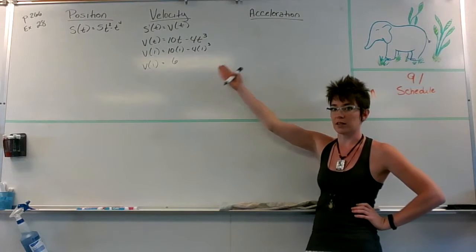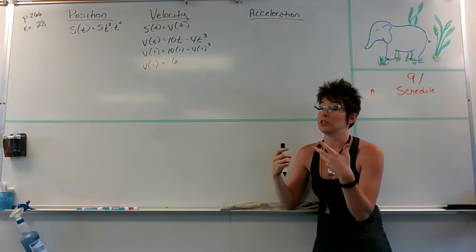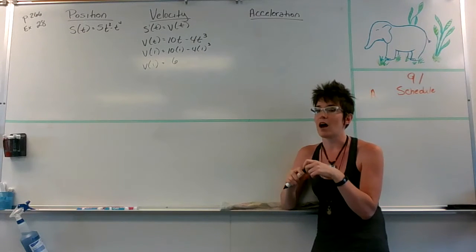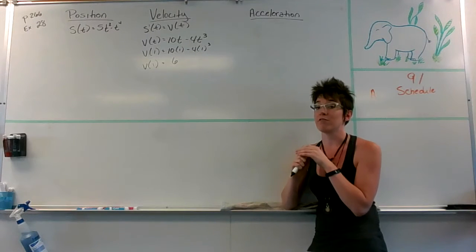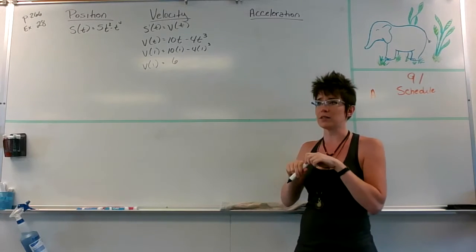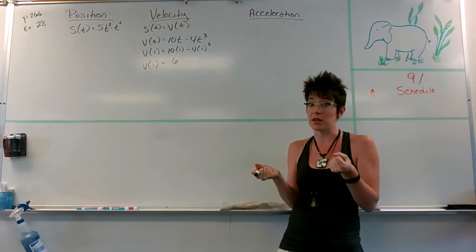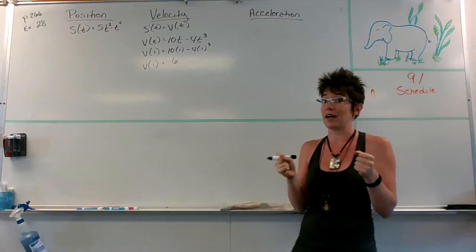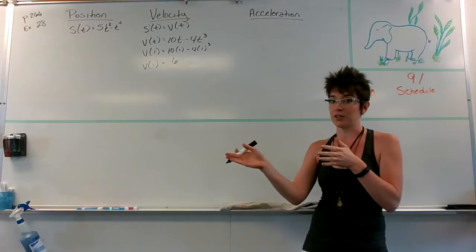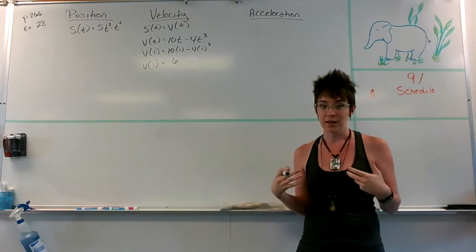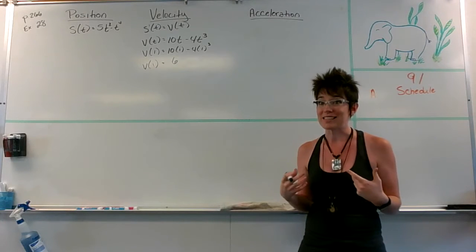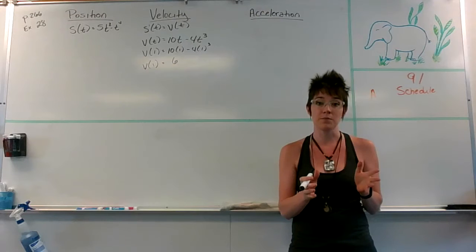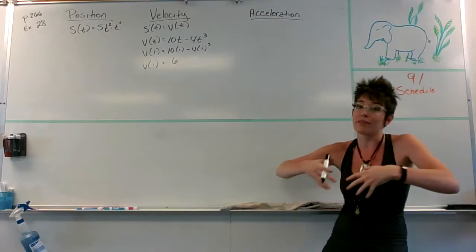The connection between velocity and acceleration is like driving a car — the gas pedal can also be called an accelerator. Acceleration is basically how quickly your velocity changes. If I have positive acceleration, that means I'm speeding up. But if I hit the brakes, that's technically negative acceleration — a decelerator. So acceleration is the rate of change in your velocity: positive if you're speeding up, negative if you're slowing down. That's where positive and negative values come into play.